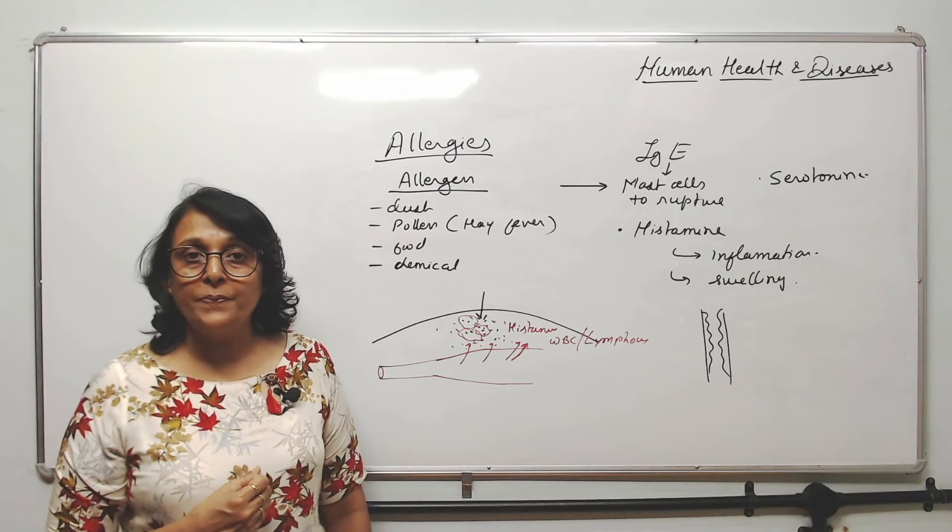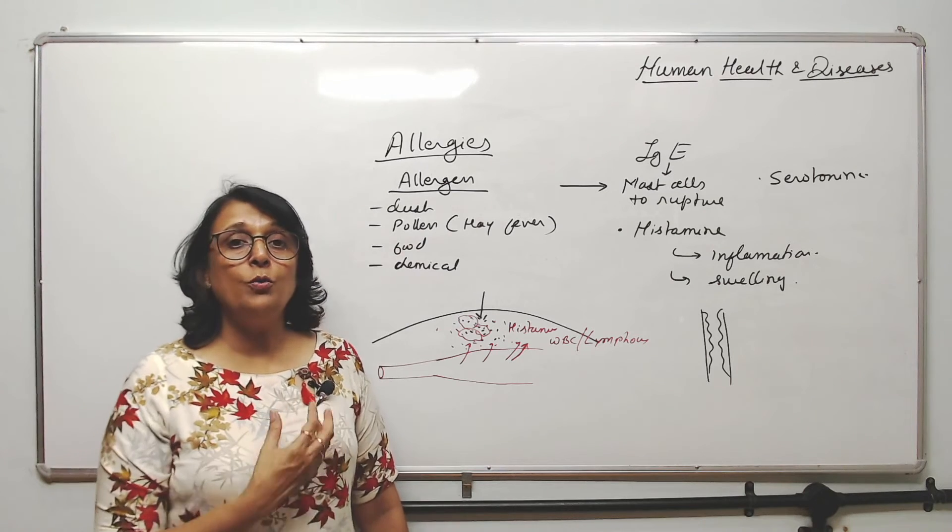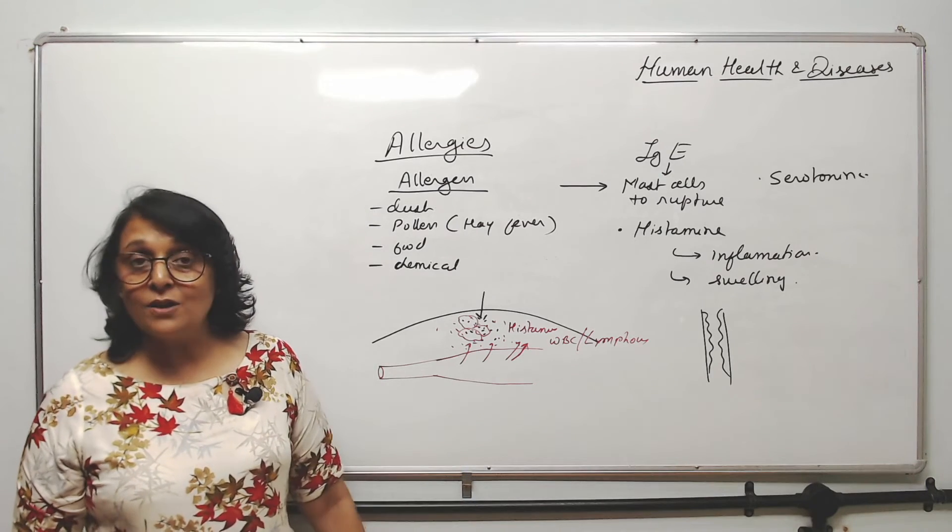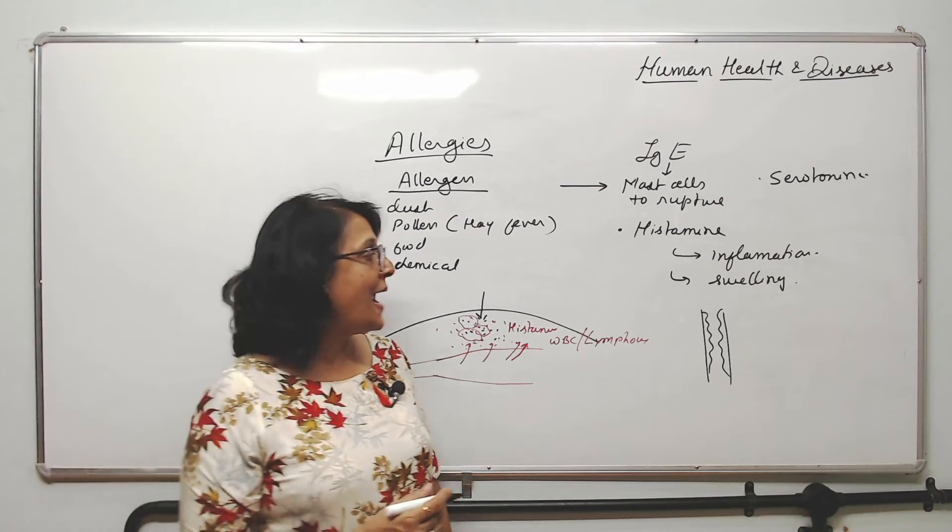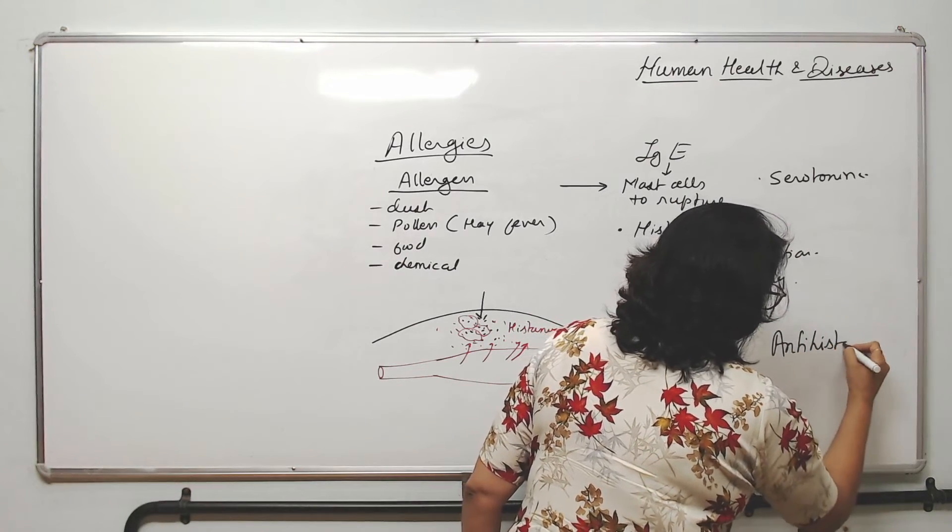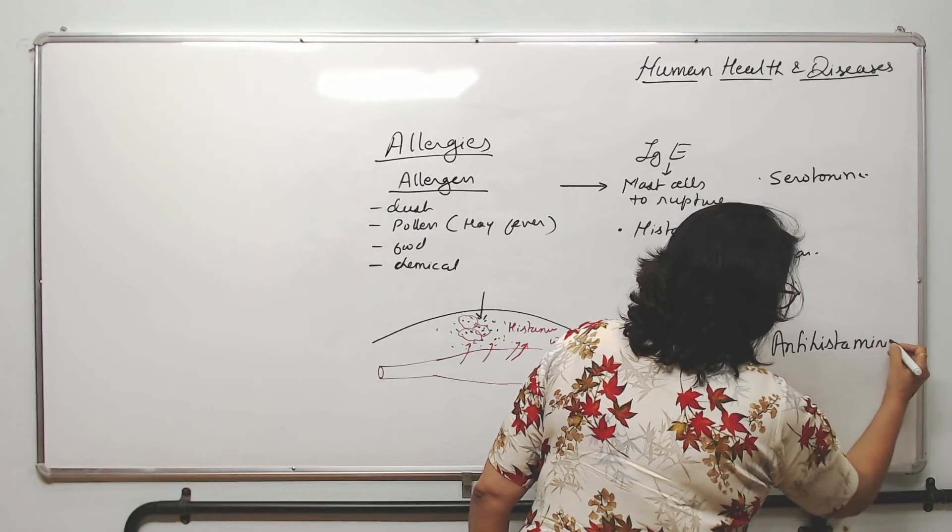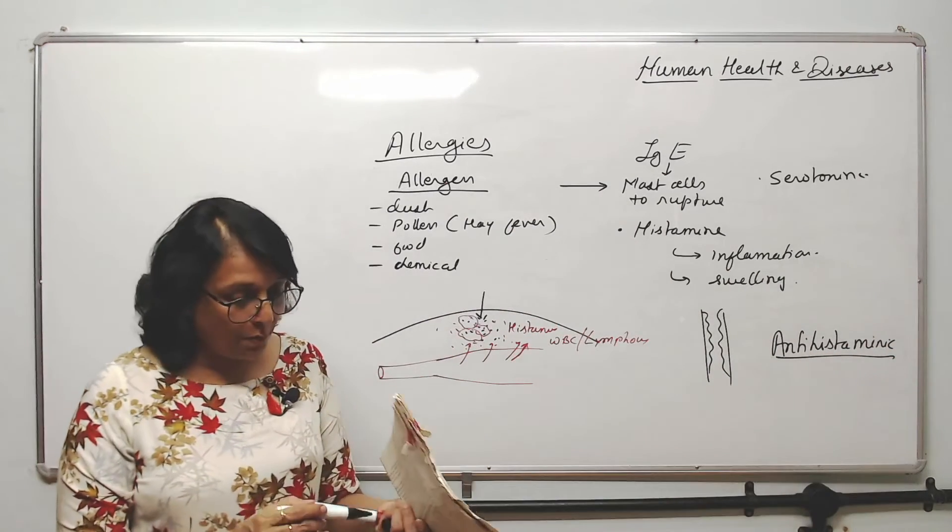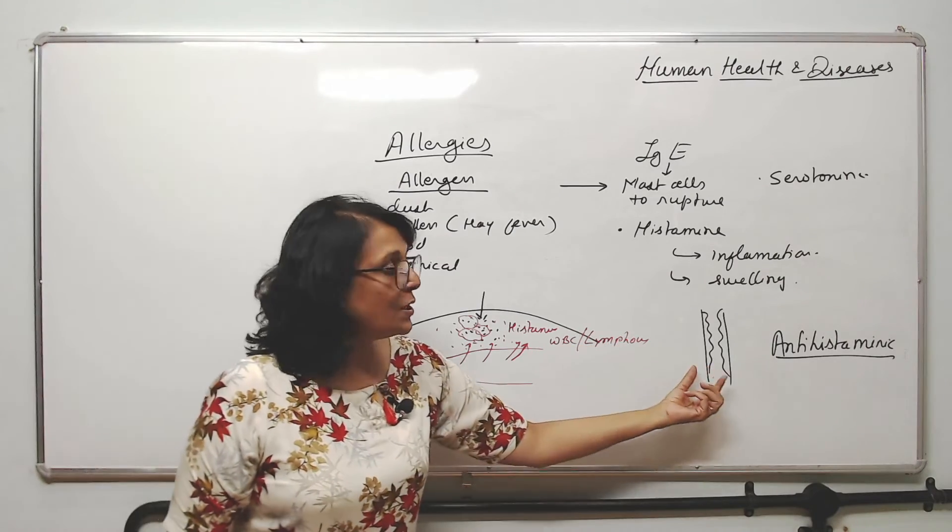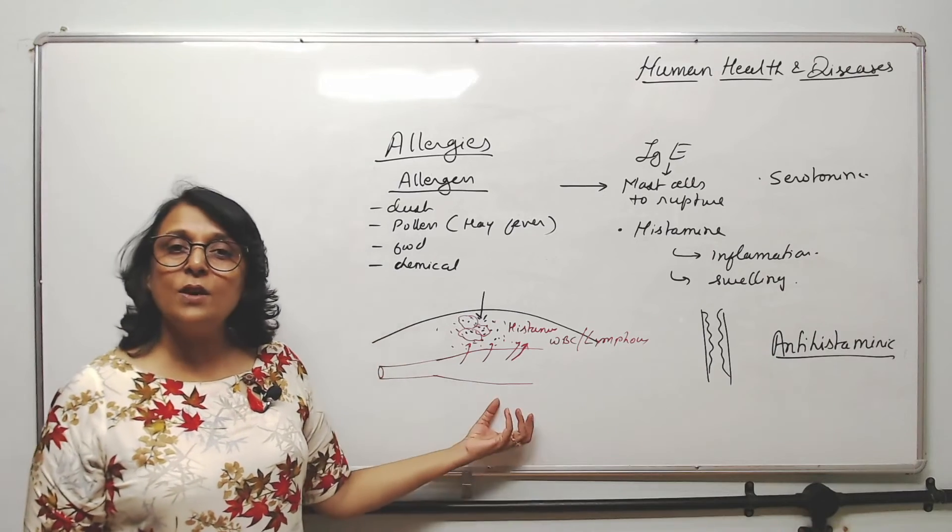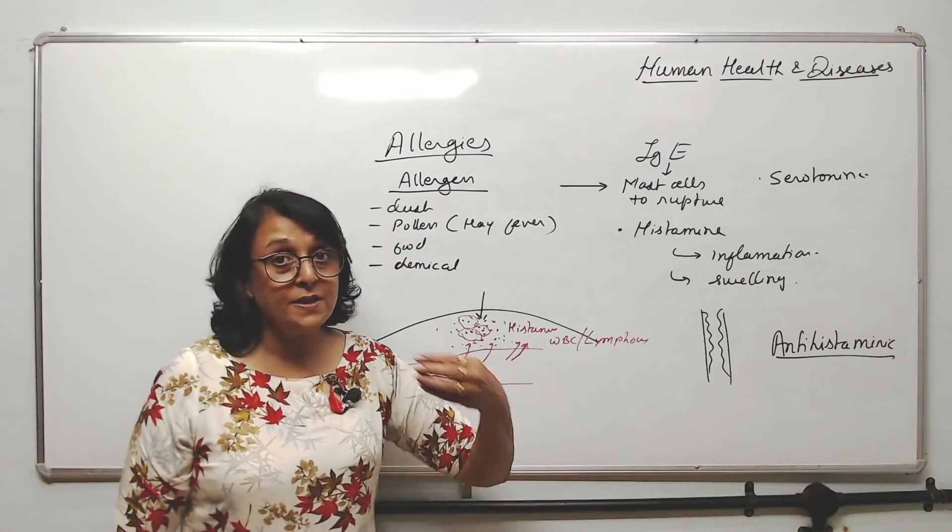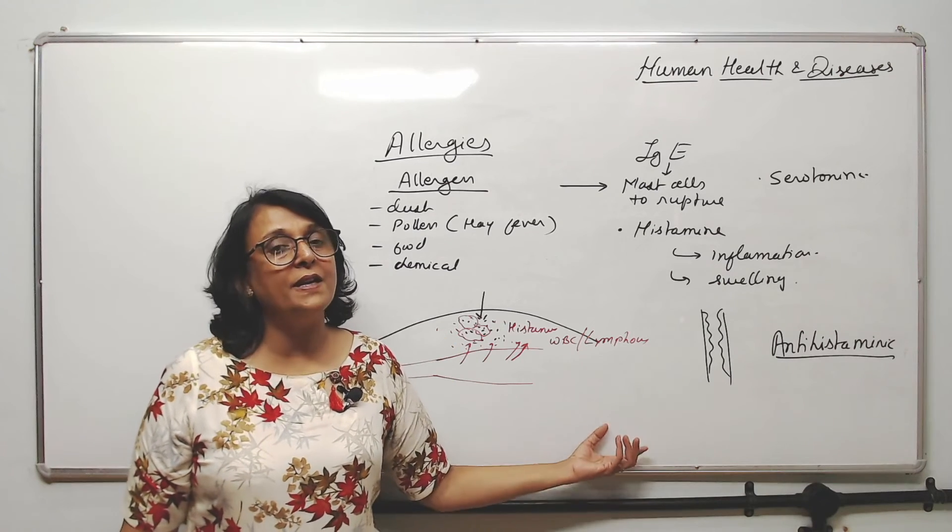And what do we do whenever such kind of allergic reactions take place? We take drugs or medicines which are called anti-histaminic. Anti-histaminic drugs will reduce or minimize the effect of histamine so that such kind of swelling doesn't take place. If it is in the local area, only in one part of the skin, that's fine. But when it happens in the respiratory tract, that can prove to be very dangerous.